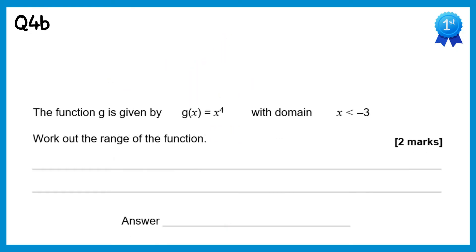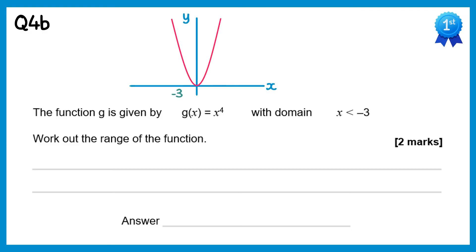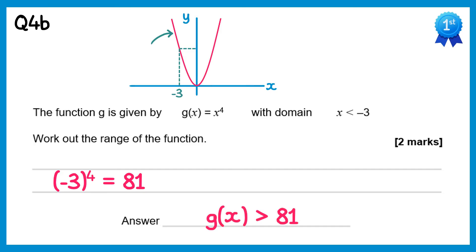For this question we have g(x) equals x to the power 4. Drawing a sketch, we've been given the domain x less than negative 3, so we're interested in the section of the graph to the left of that. We need to work out the y value at the boundary by substituting in negative 3: negative 3 to the power 4 is positive 81. So the range of this function is g(x) greater than 81.